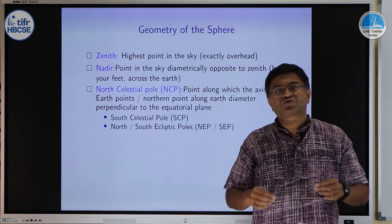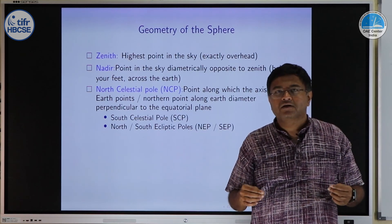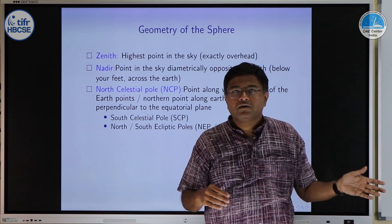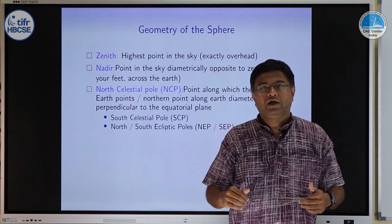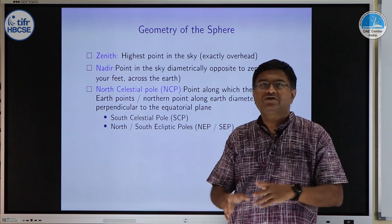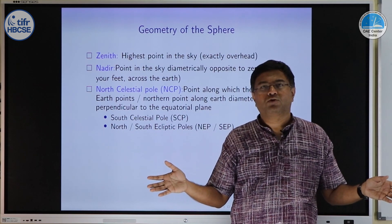Because Polaris is there very close to it, we can use it as easy reference. There have been situations in the past where no such star was there. Even today, if you go to the southern hemisphere, there is no good point reference star close to south celestial pole.